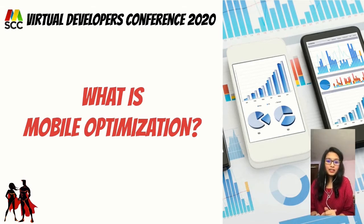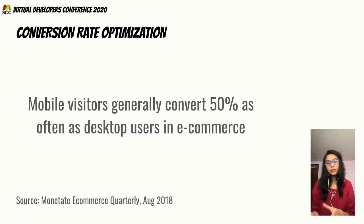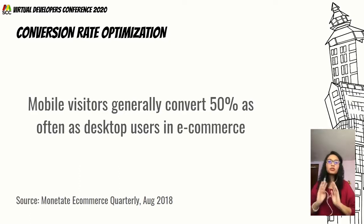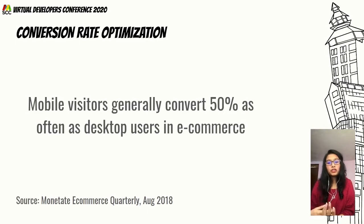Conversion rate optimization — for those not familiar with the term — is increasing the percentage of visitors on your website so they take a desirable action. For example, you want them to fill in a contact form so you can obtain their contact details and convert visitors into paid customers.